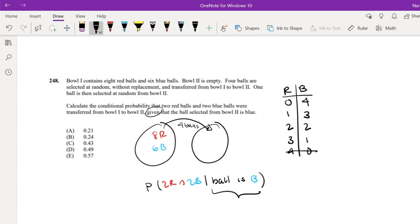Okay, so now we're looking for the probability that the ball selected from ball 2 is blue. Because our conditional probability formula goes like this, right? Probability of 2 red, 2 blue, and ball is blue, given the probability that the ball is blue. So we can calculate the probability that the ball is blue first.